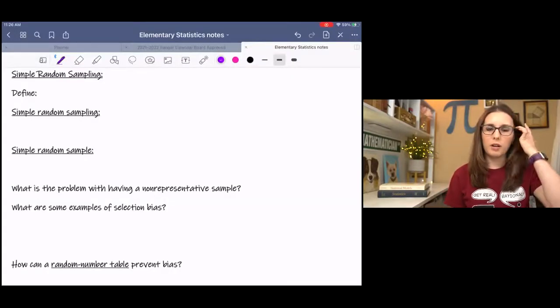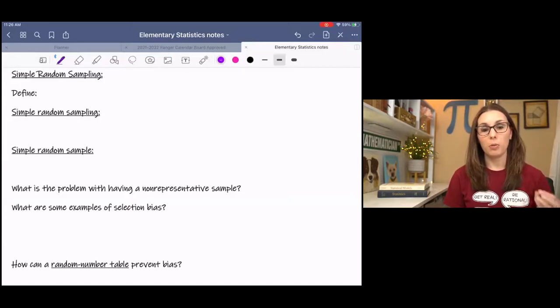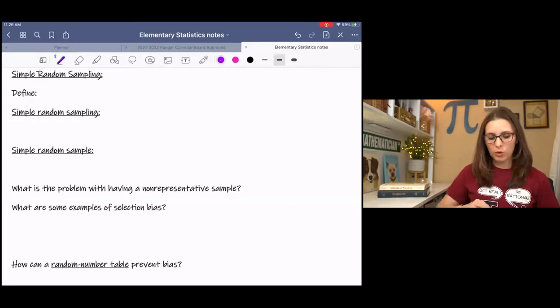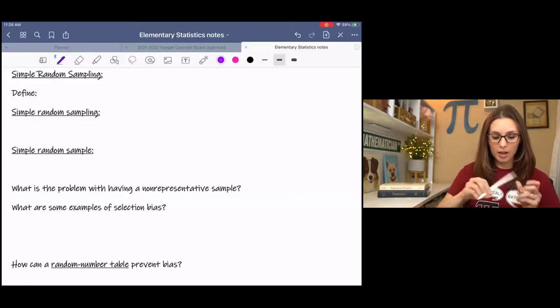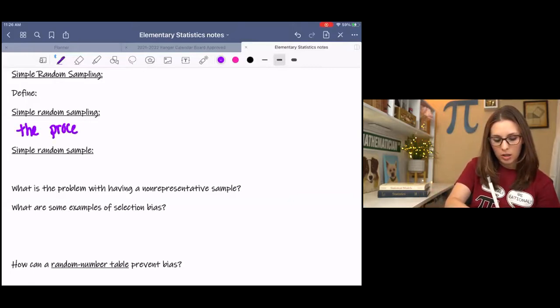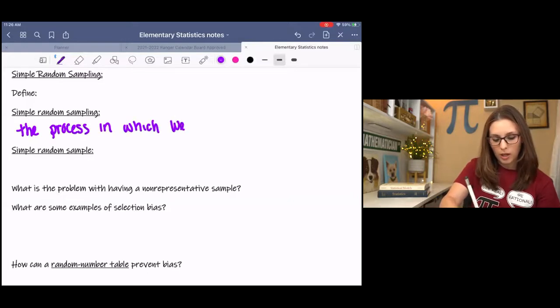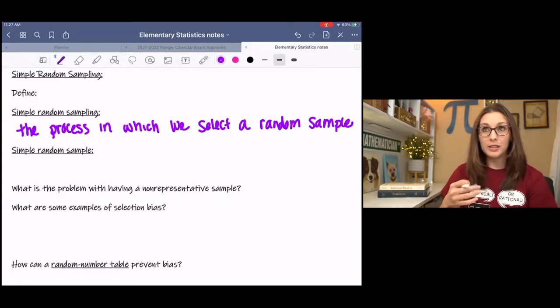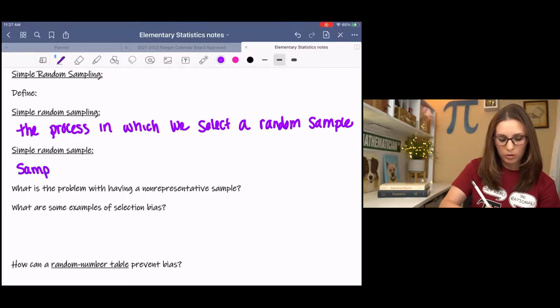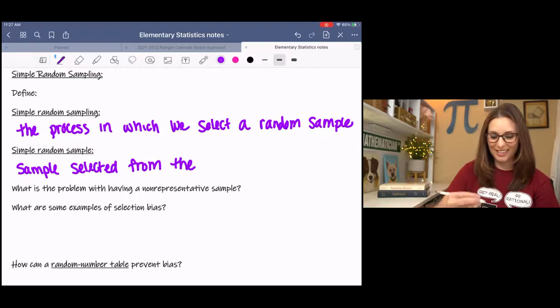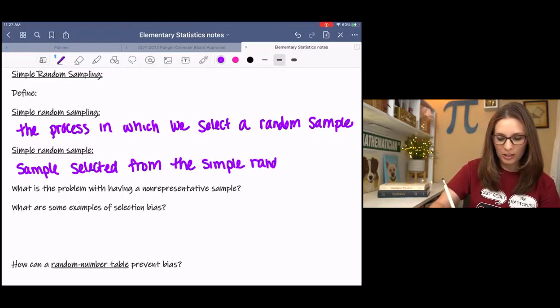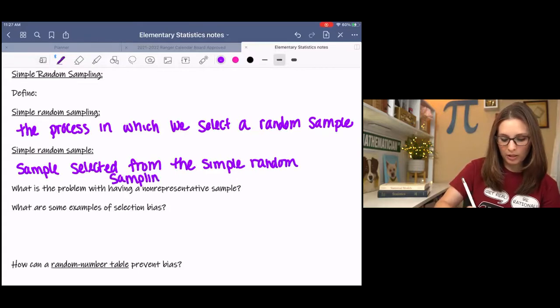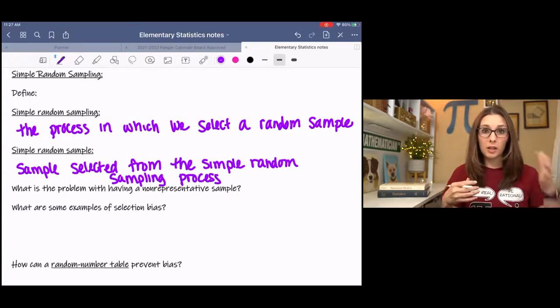I talked about in my last lesson the importance of pulling a sample that truly represents your population, and there are specific do's and don'ts as you select a sample. So a simple random sampling is the process in which we select a random sample. And a simple random sample is the sample selected from the simple random sampling process. So one is the process and one is the result, basically.